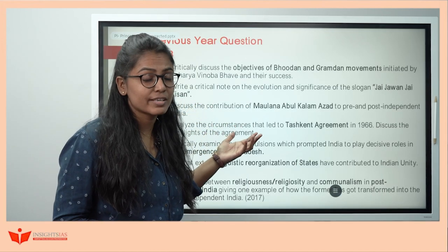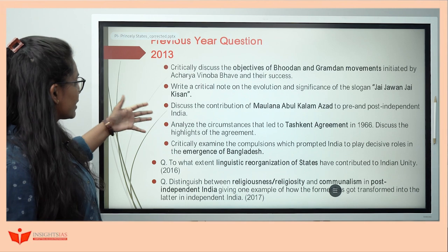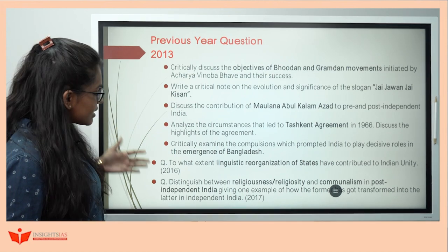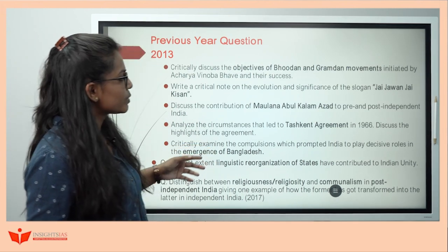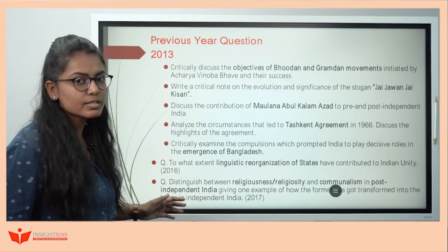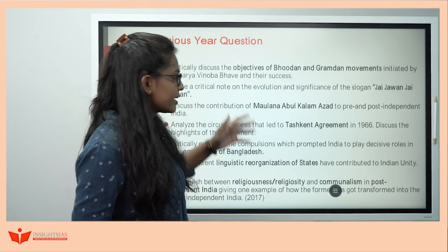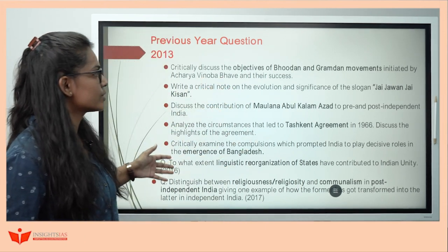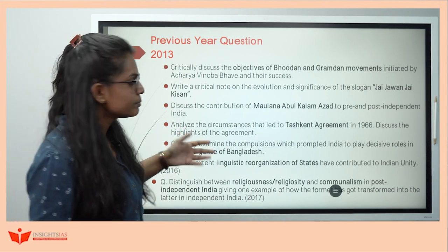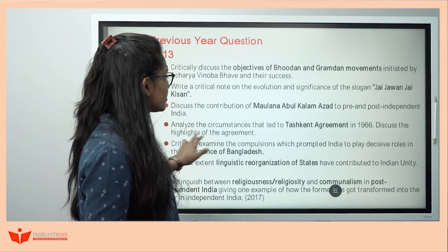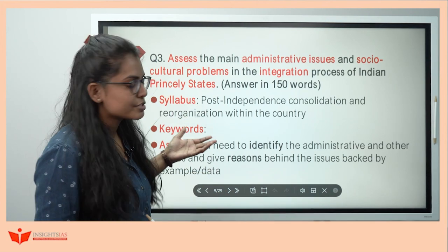By analyzing previous year questions, from 2013 five questions were there, then 2016 and 2017 had one each. One thing I observed was that in none of these was there a question about integration of princely states. But I've given this here so that you can analyze how to go about post-independence and prepare it accordingly. Let's see how to approach the question.